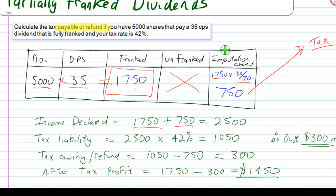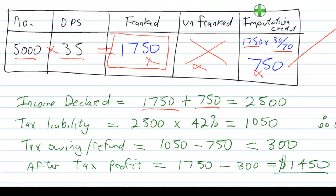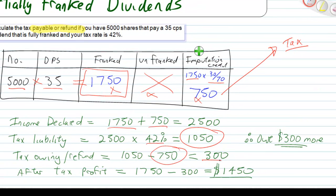So it's whatever's in these three boxes here, this box, and this box, and this box. So then our tax liability is the 2,500 times by our tax rate, gives us 1,050. So that's how much money, 1,050 is how much money we should be paying in tax. But we've already paid $750 worth in tax. So you can see that we owe a little bit more. So we're meant to be paying 1,050, which we've already paid $750, so that means we owe $300.